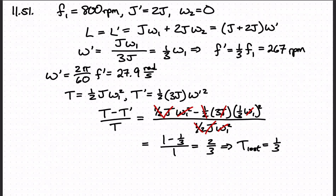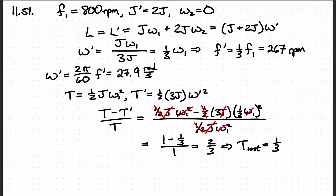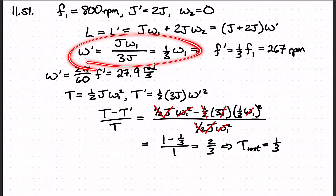They ask us what fraction of the original rotational kinetic energy is lost. We can figure out the initial kinetic energy and the final kinetic energy, and compute the fractional change as (initial minus final) over initial. Plugging everything in, a lot of terms cancel out, and using the expression for ω′, this winds up being two-thirds — meaning two-thirds of the kinetic energy remains after coupling.